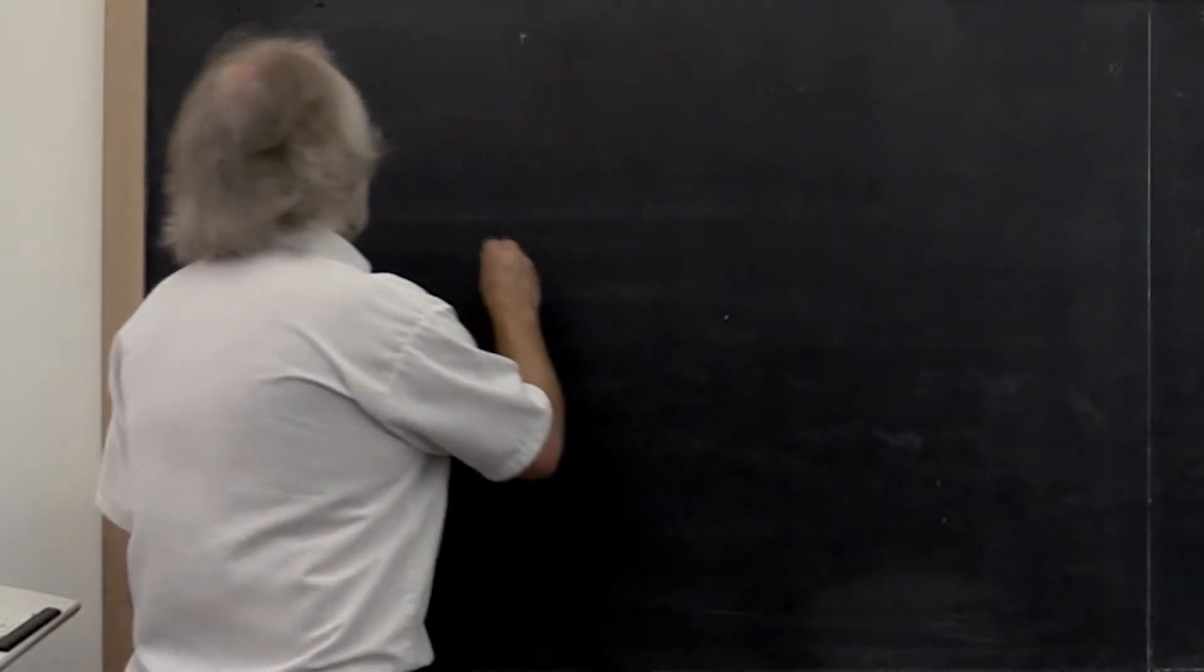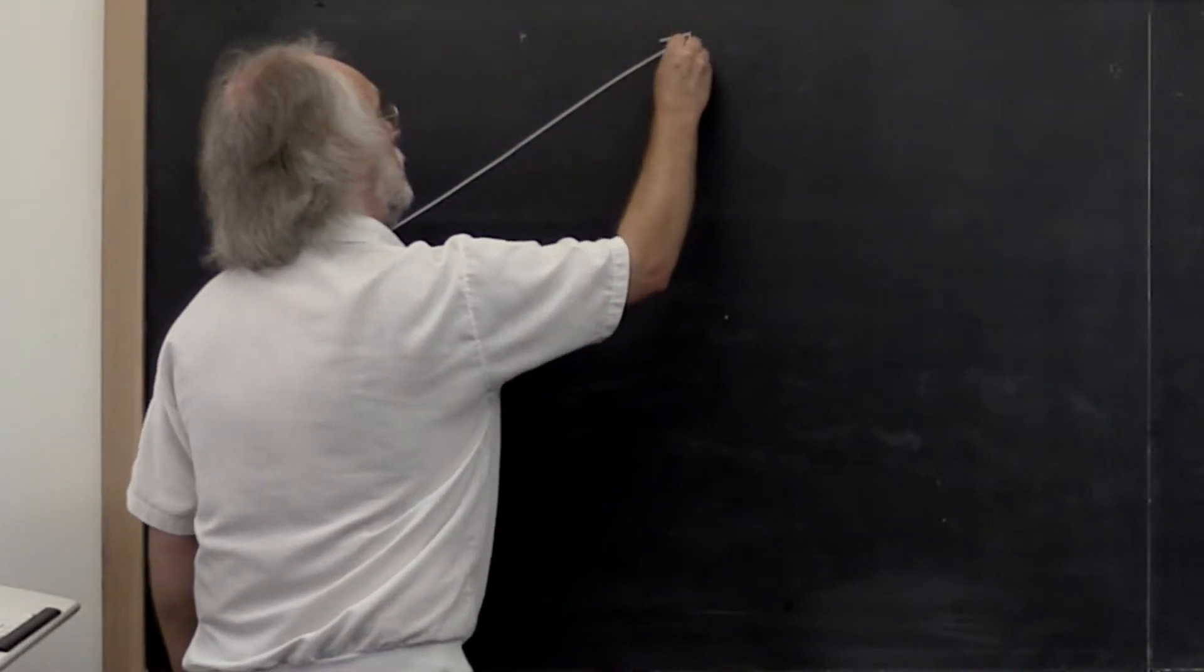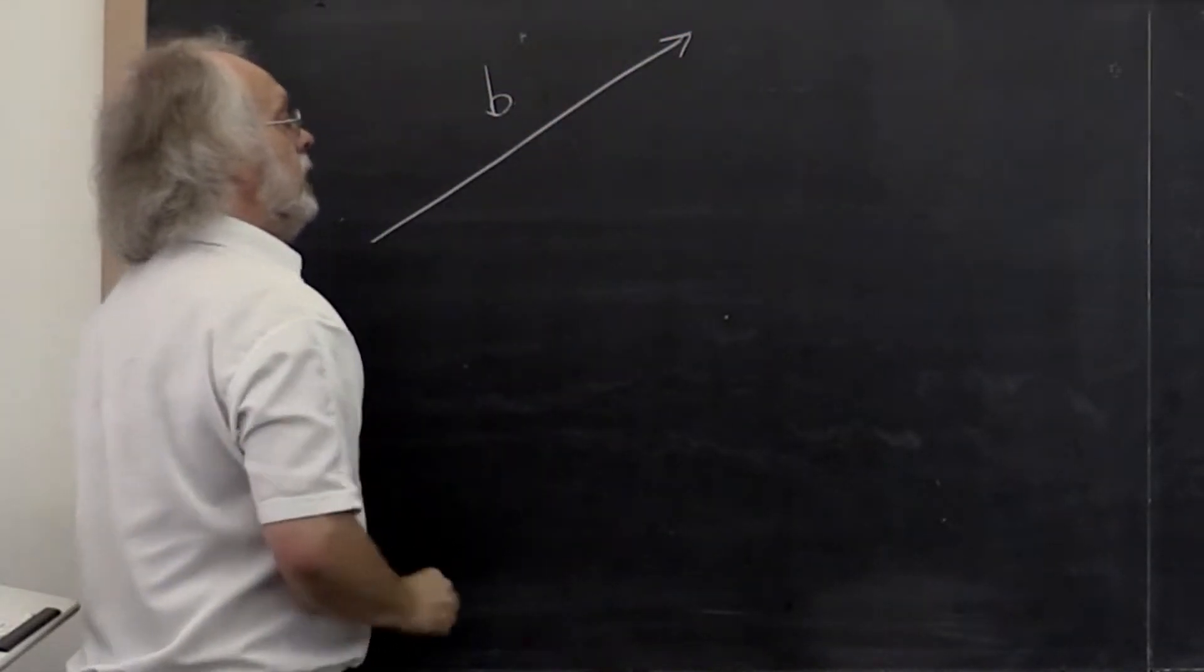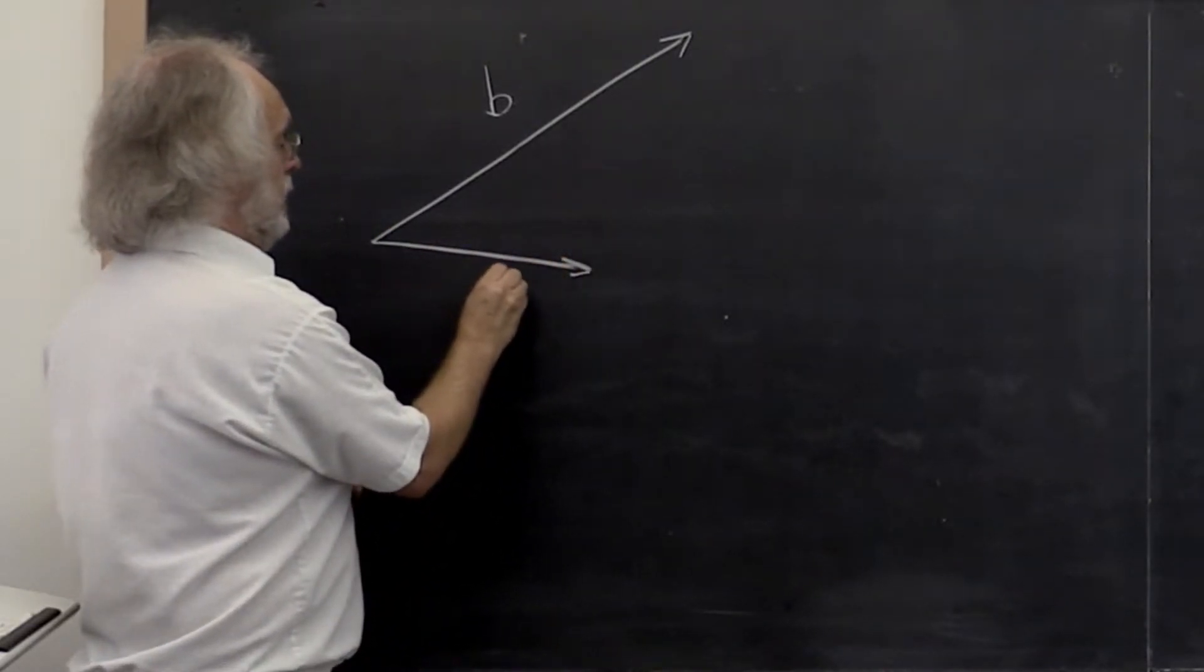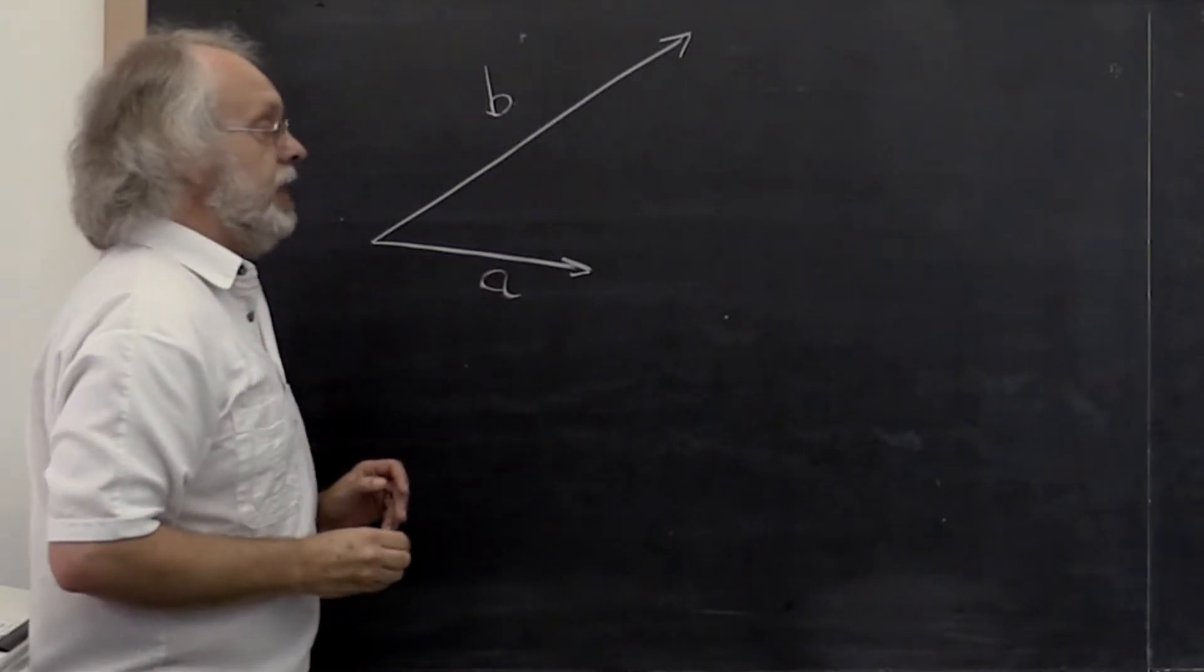What if we have a vector B, and we would like to know what the component of B is in the direction of A?